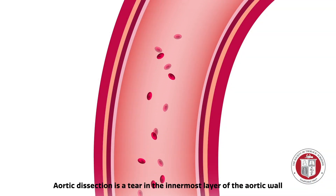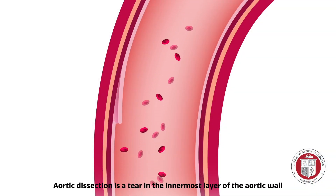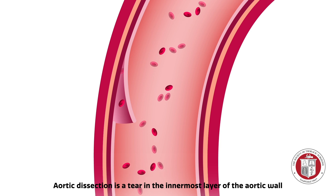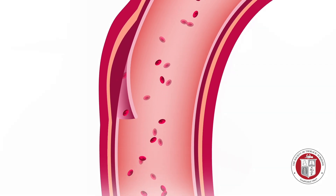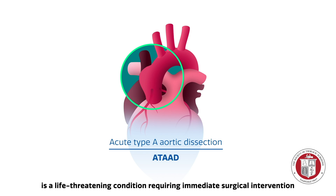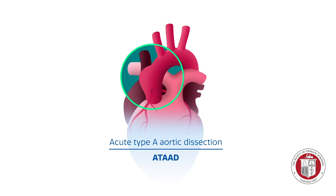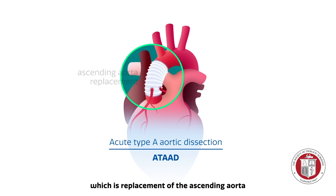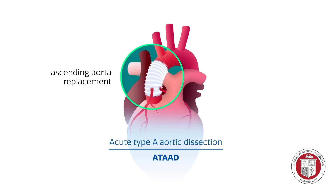Aortic dissection is a tear in the innermost layer of the aortic wall. Acute type A aortic dissection, or ATAAD, is a life-threatening condition requiring immediate surgical intervention, which is replacement of the ascending aorta.